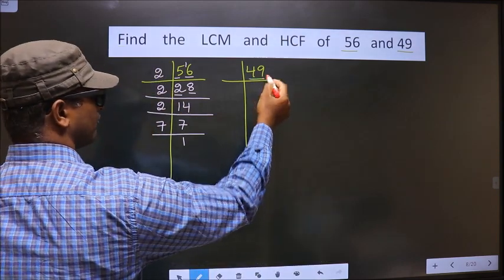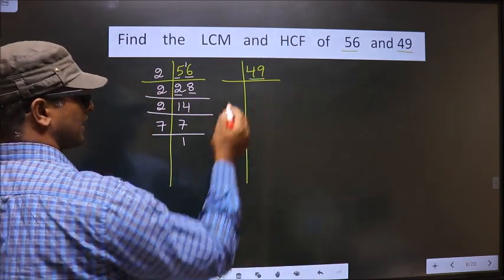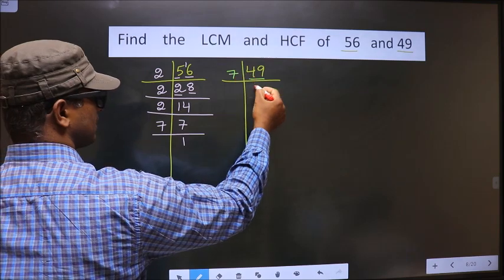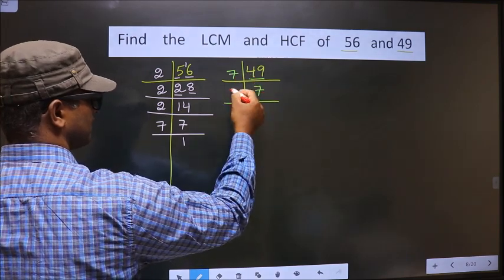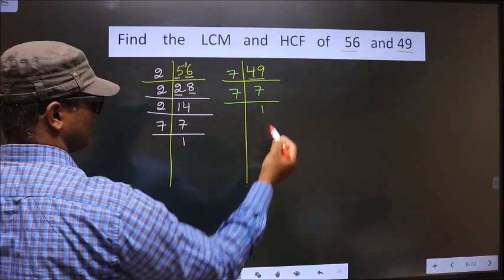Now, here we have 49. 49 is nothing but 7 times 7 is 49. Now, 7 is a prime number, so we take 7 and 1.